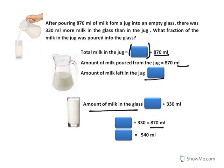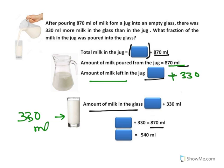Now, the amount of milk poured is equal to 870 ml, so this is exactly what is there in the glass. And the glass had 330 ml more milk than what was left in the jug. So if this rectangular unit is left in the jug, the glass will have this rectangular unit plus 330 ml. This is the amount of milk in the glass, and this is exactly equal to the amount of milk poured from the jug.